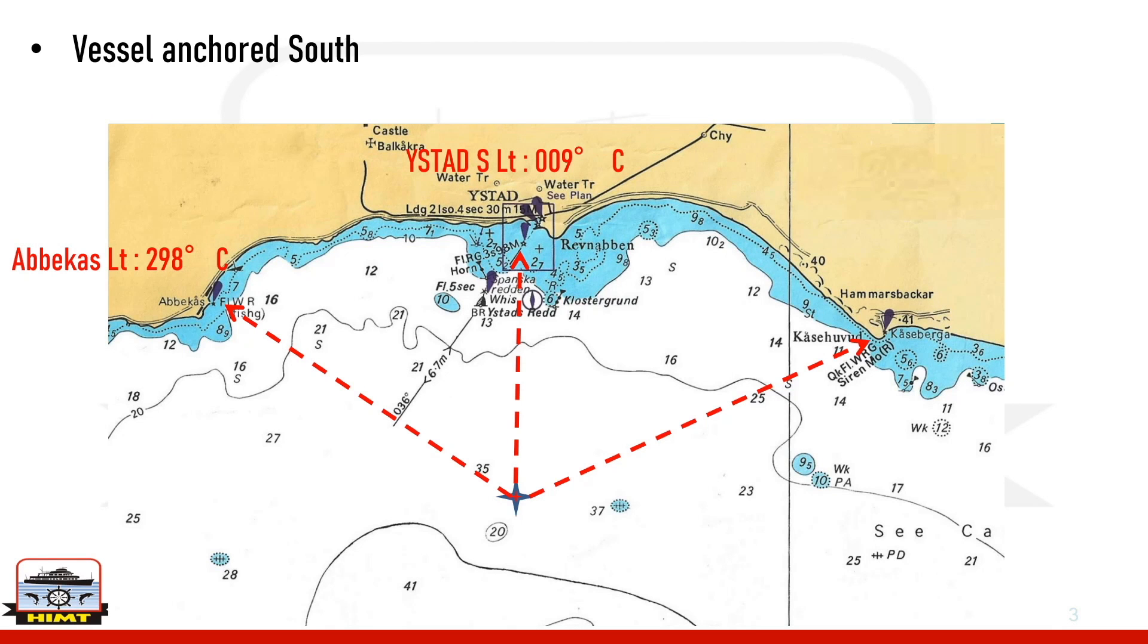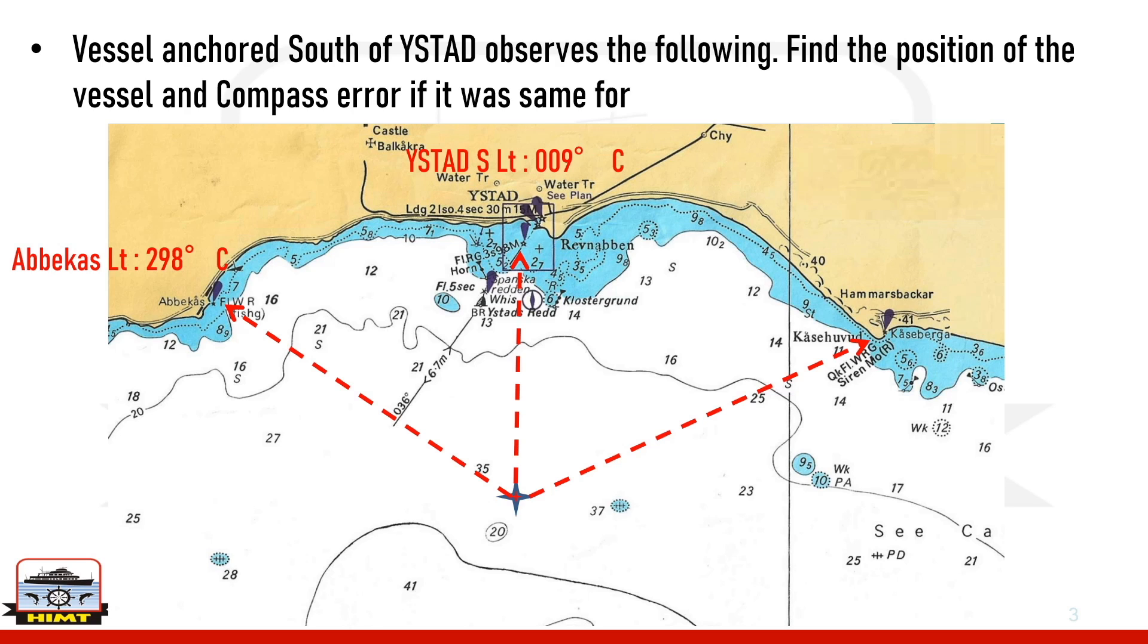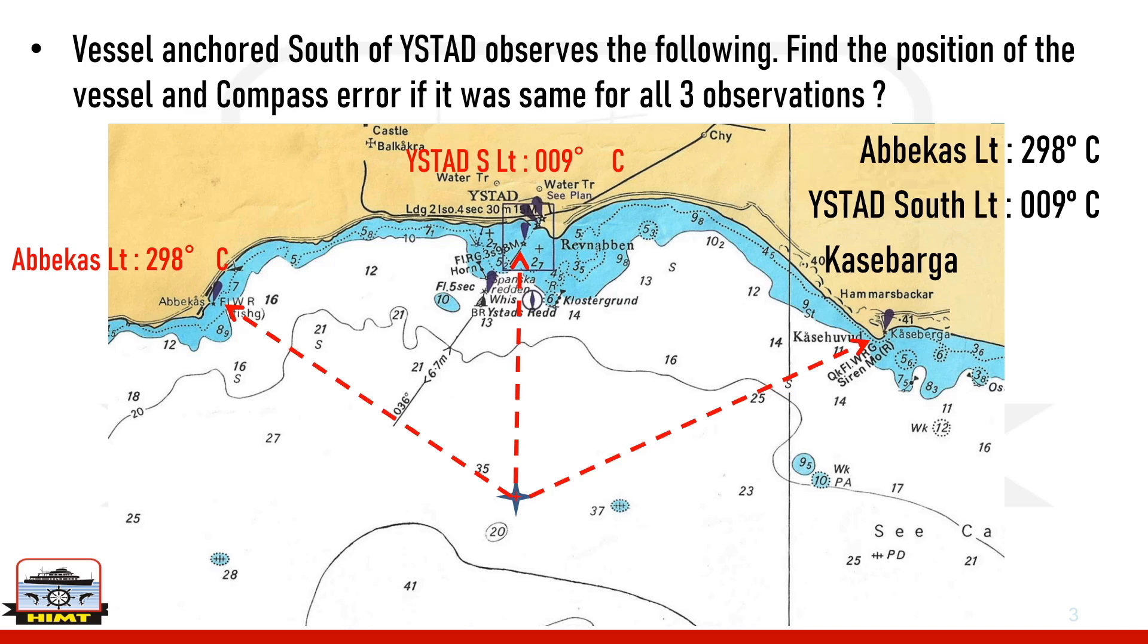Let's have a look at this vessel. A vessel anchored south of Weistad observes the following: Abacast light 298 compass, Weistad south 009 compass, and Kasebarga light 078 compass.